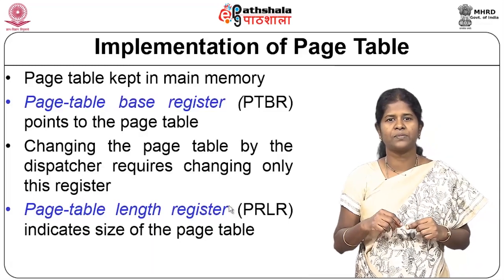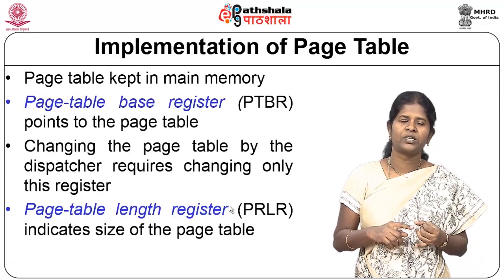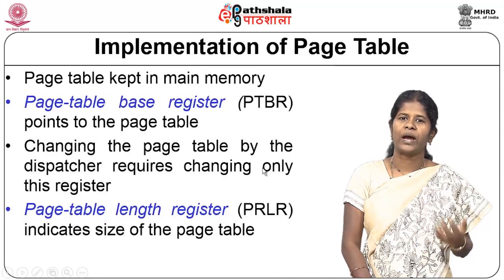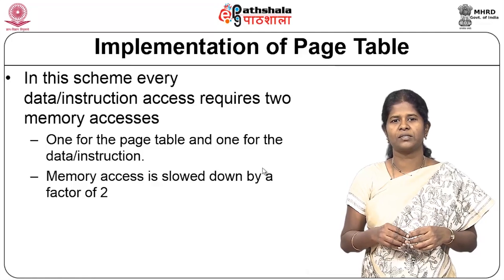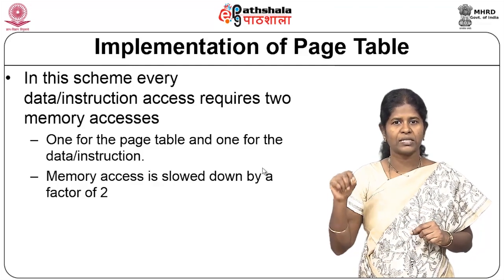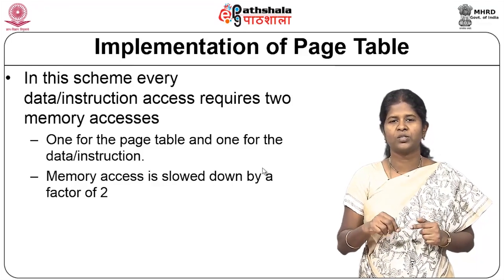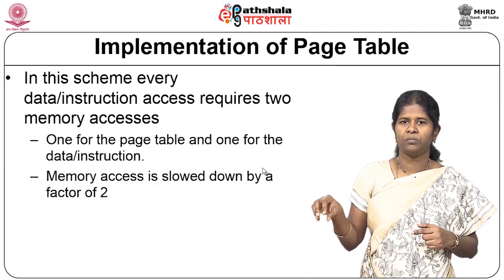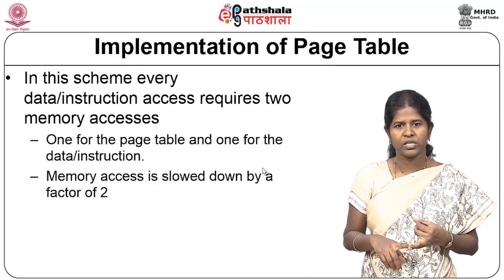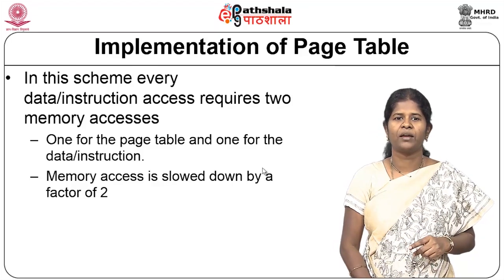There is also a Page Table Length Register (PTLR) which stores the size of the page table. Having both the base address and the size allows any address to be validated and the actual location to be accessed. In this scheme, memory must be accessed twice: once to access the page table in main memory to get the frame number, and a second time to access the actual data or instruction at the physical address. This slows memory access by a factor of 2.